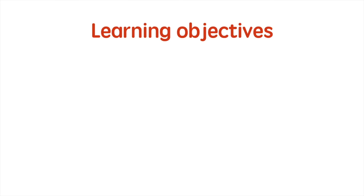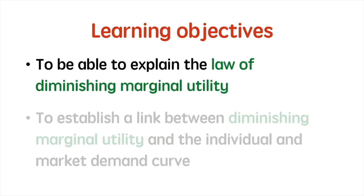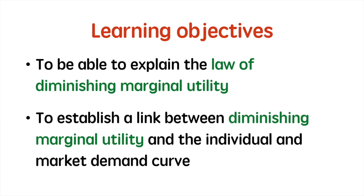By now you should be able to explain the law of diminishing marginal utility and also identify the link between diminishing marginal utility and the individual and market demand curve.